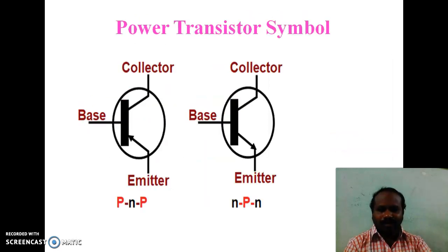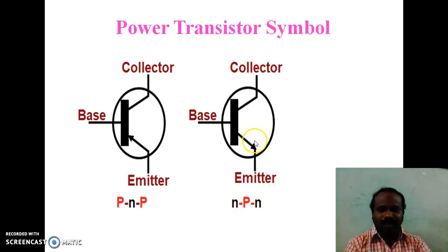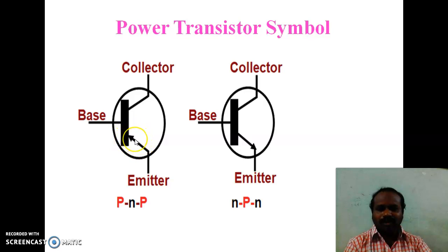These are the symbols of Power Transistors. Symbol for PNP Transistor and symbol for NPN Transistor. The only difference in the symbol is the direction of the arrow. In NPN Transistor, the direction of the arrow is outwards. In PNP Transistor, the direction of the arrow is towards inside.